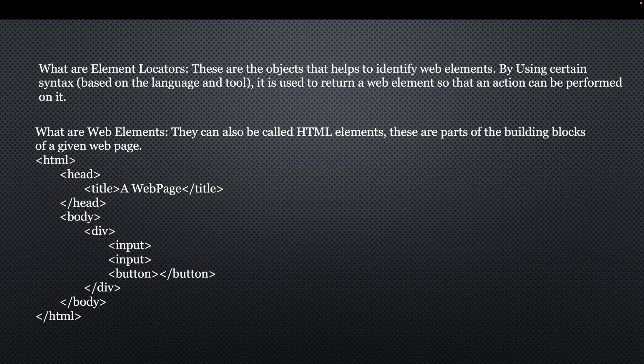Web elements are the things a web element locator helps to identify, and they are objects that help to identify web elements using certain syntax based on the tool and language. For instance, if you want to identify an element using any Selenium-based tool, you first instantiate the WebDriver, then call dot findElement, and find the element by a particular locator identifier. In Cypress you would do dot get, and in Playwright you do dot locator — so the syntax differs across tools.